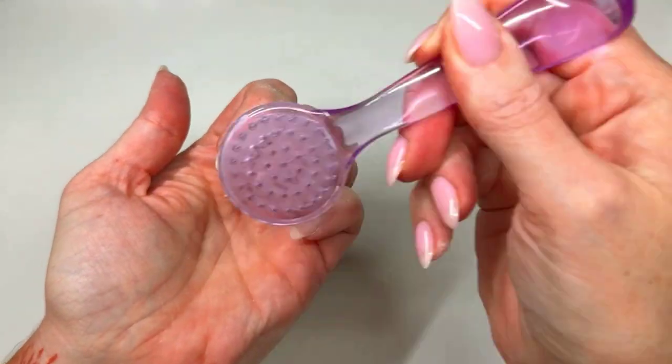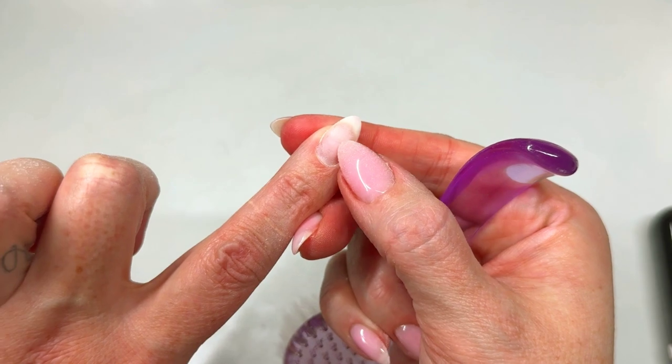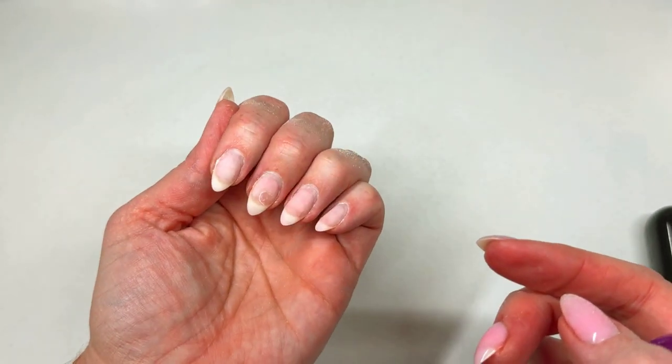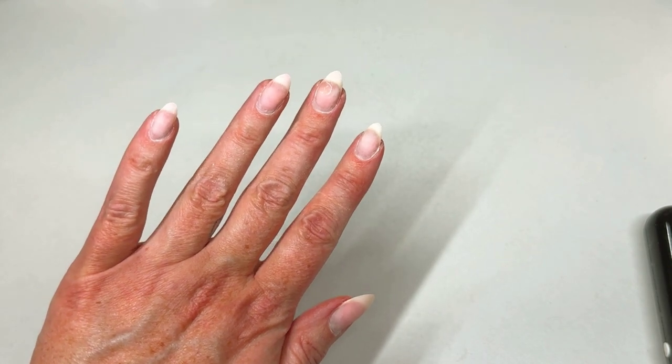So you can see here, my new nail growth is already prepped with a little texture. And I also went down over existing product to give it a little texture and make sure my transition is very, very smooth.